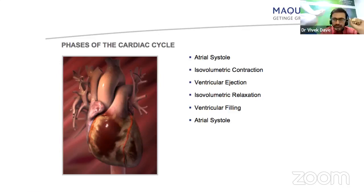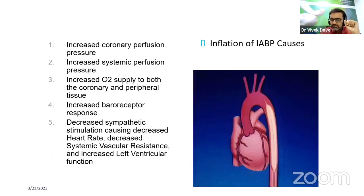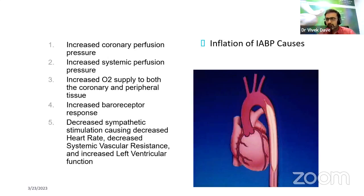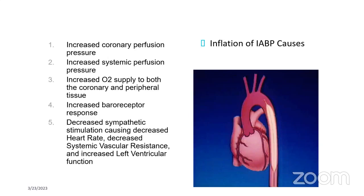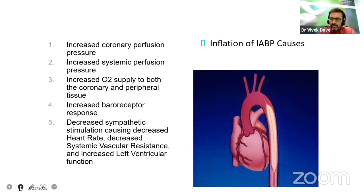What IABP does: whenever there is ischemic cardiomyopathy, severe myocardial infarction-induced severe LV dysfunction — known as cardiogenic shock — when heart contraction is affected, IABP works opposite to the cardiac cycle. Whenever the heart contracts, IABP relaxes; whenever the heart relaxes, IABP inflates. Inflation of IABP causes increased coronary perfusion pressure, increased systemic perfusion pressure, increases oxygen supply to both coronary and peripheral tissue, increases baroreceptor response, decreases sympathetic stimulation causing decrease in heart rate, decreased systemic vascular resistance, and eventually increases left ventricular function.